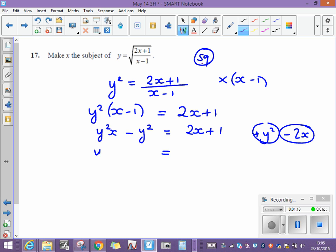So the left-hand side now is going to be y squared x minus the 2x. And on the right-hand side, the 2x has now disappeared. I'm left with 1, and I've moved the y squared to the right, so it's 1 plus y squared.